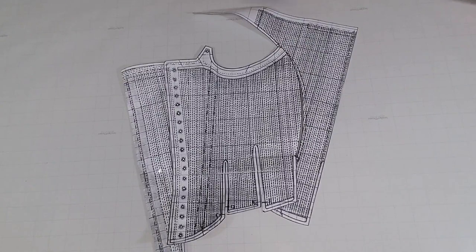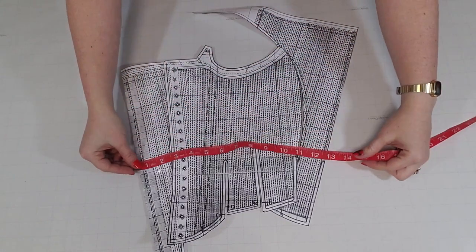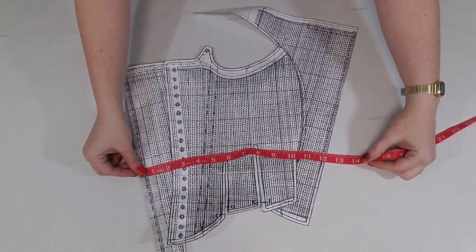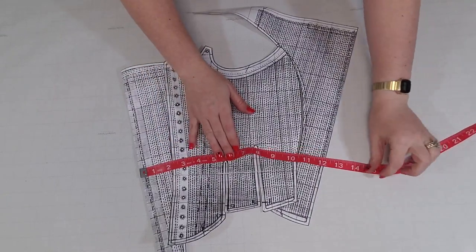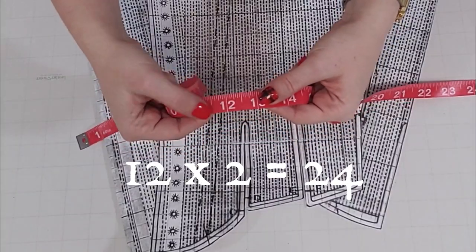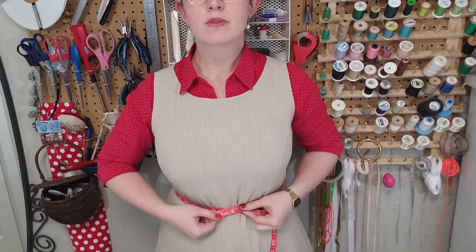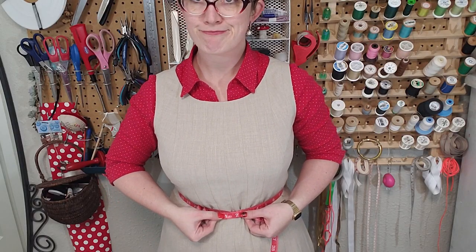When I measured the waist of the paper pattern, it came out to approximately 24 inches in the waist. Even accounting for negative ease, I most decidedly do not have a 24 inch waist, so we're going to need to make that a little bit bigger.